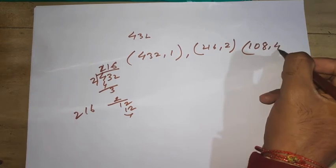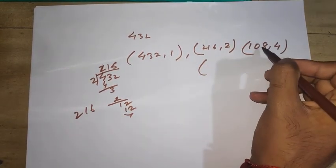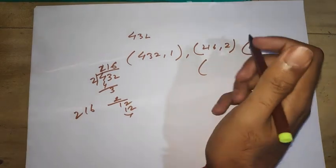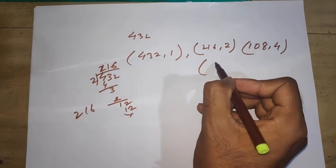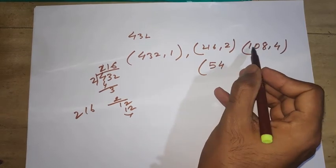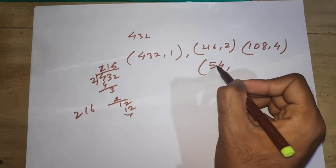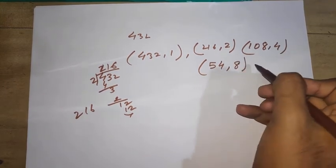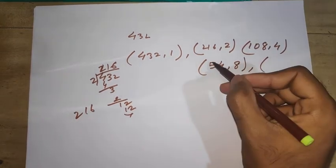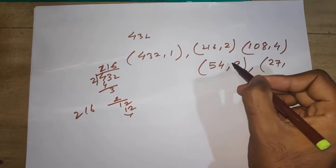Again divide by 2. 108 divided by 2 gives 54, and multiply 4 by 2 to get 8. Then divide by 2 again to get 27, and 2 times 8 is 16.